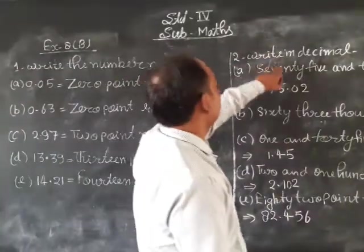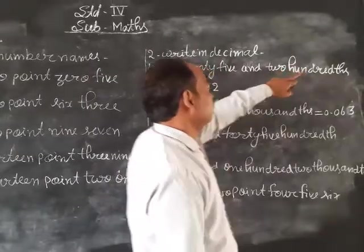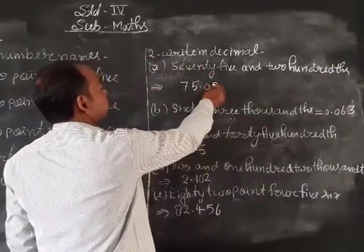Write in decimal. Part A: 75 and 2 hundredths. So 75.02.